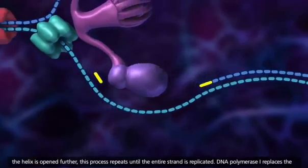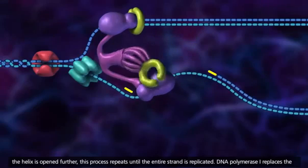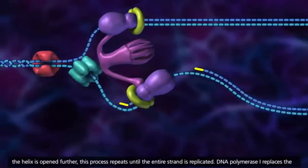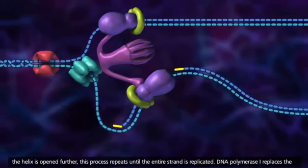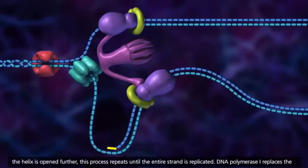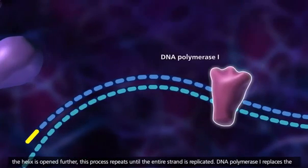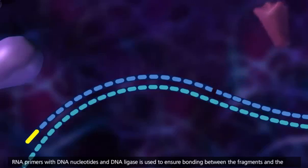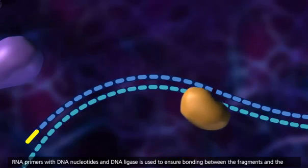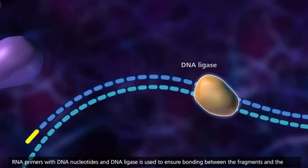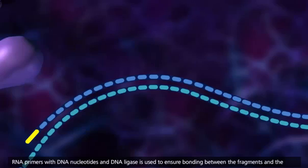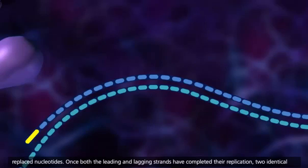As the helix is opened further, this process repeats until the entire strand is replicated. DNA polymerase 1 replaces the RNA primers with DNA nucleotides, and DNA ligase is used to ensure bonding between the fragments and the replaced nucleotides.